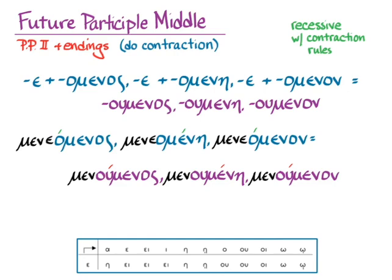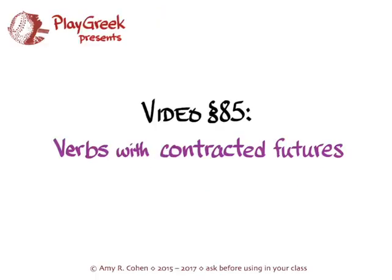And there you have it. That should be what you need to know for verbs with contracted futures — they're really quite common. The other one from this chapter is angellō, whose second principal part is angeleō.